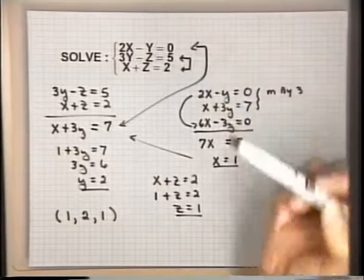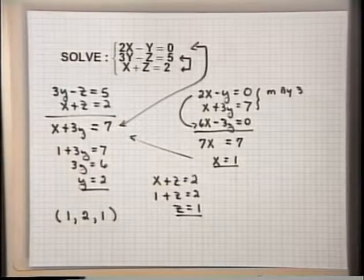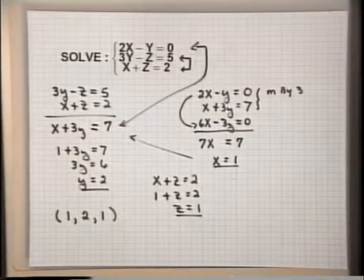It turned out that for this particular system, by having some equations not contain all of the variables, we ended up doing a little less work than on the first system. Just be careful on the second step: make sure that you use a different pair of equations and that you don't go back and use the same two equations.